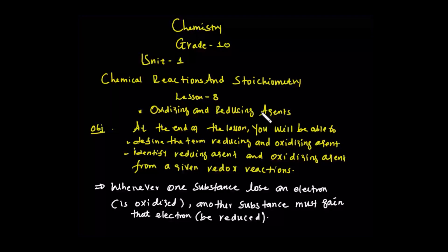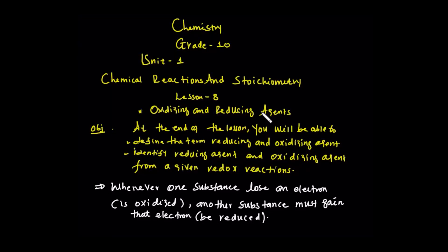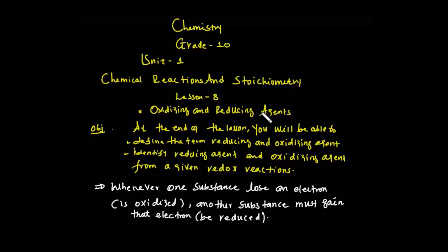We can define another objective: how to determine or calculate the oxidation number of a given element in a compound. In order to calculate the oxidation number, we should follow certain steps. Rule 1: the oxidation state of any uncombined element is zero. That means in the free state, the oxidation number is zero.